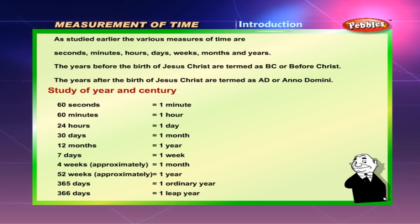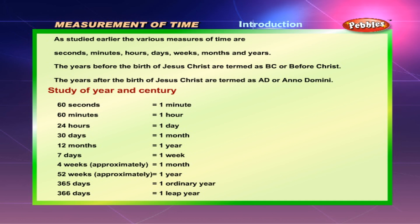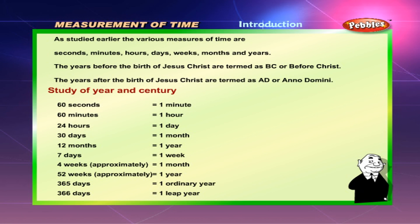Study of Year and Century. 60 Seconds is equal to 1 Minute. 60 Minutes is equal to 1 Hour. 24 Hours is equal to 1 Day. 30 Days is equal to 1 Month. 12 Months is equal to 1 Year. 7 Days is equal to 1 Week. 4 Weeks approximately is equal to 1 Month. 52 Weeks approximately is equal to 1 Year. 365 Days is equal to 1 Ordinary Year.